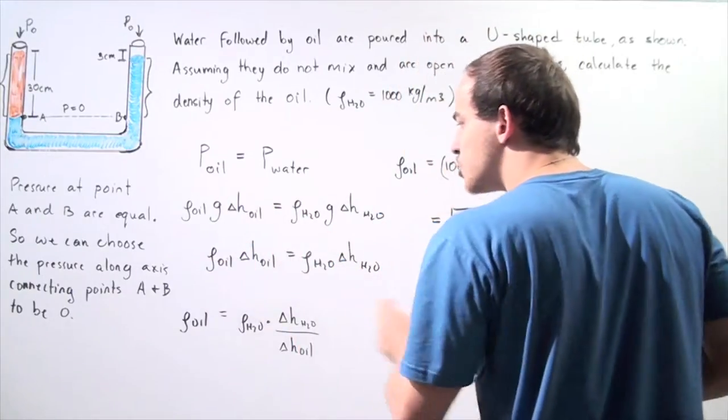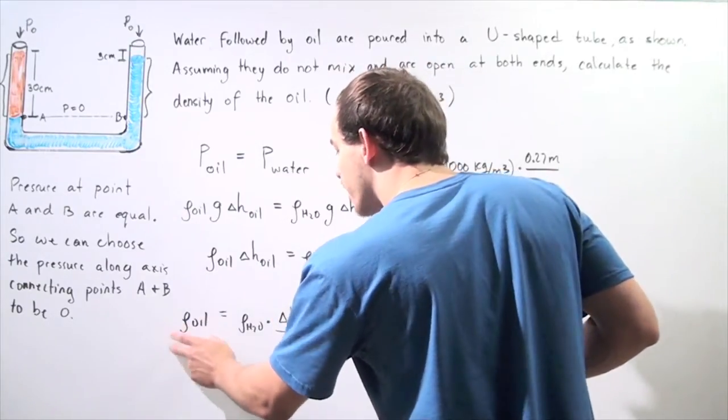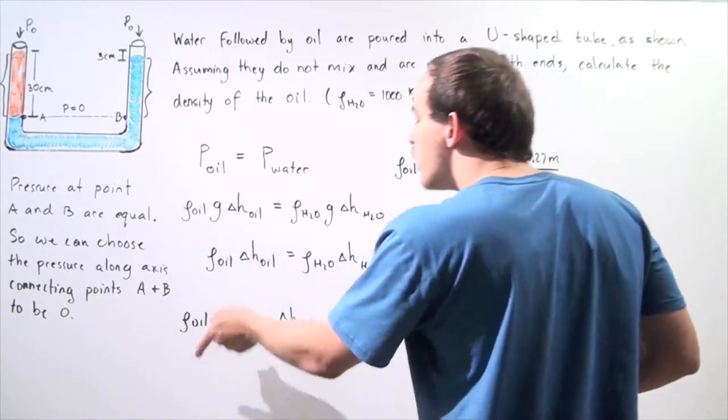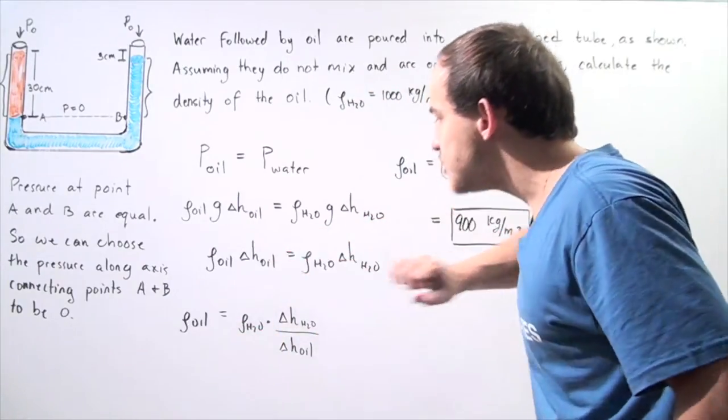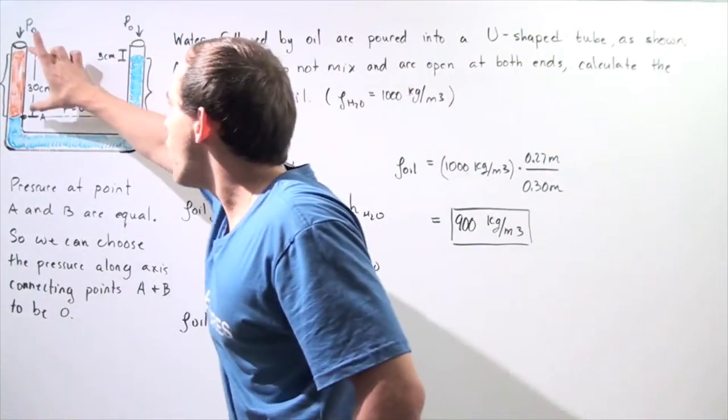And now, in this equation, we solve for the density of oil. So density of oil is equal to the product of the density of water multiplied by the ratio of the water's distance to the oil's distance.